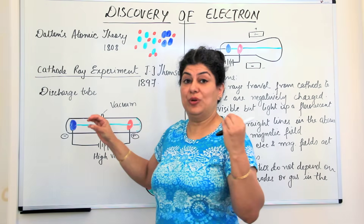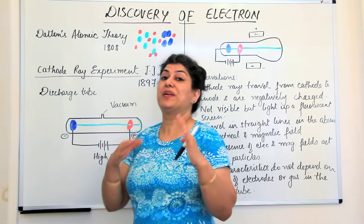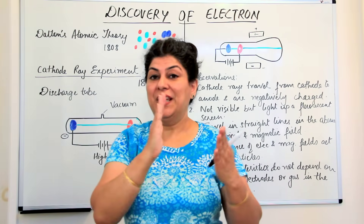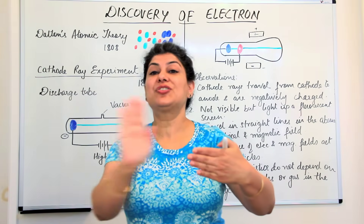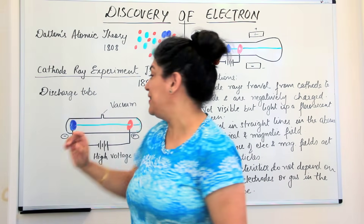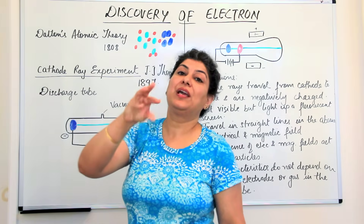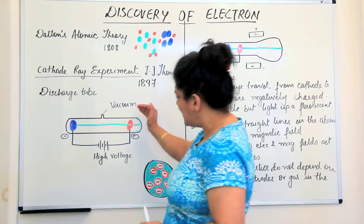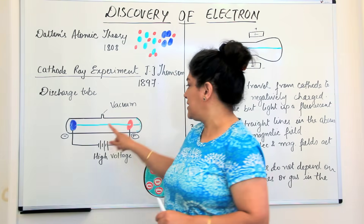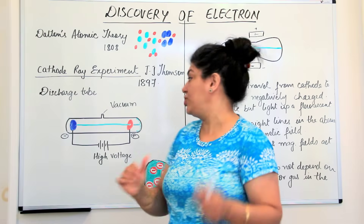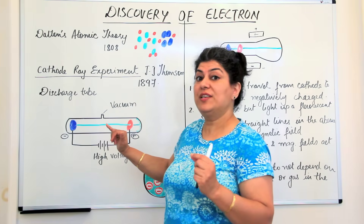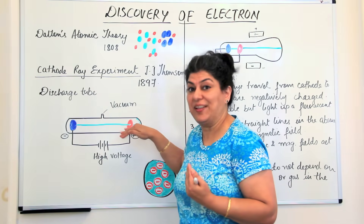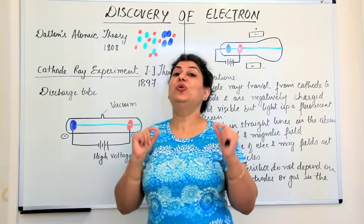This is the cathode ray tube, which is also present in television screens producing images. Even today, television screens are coated with fluorescent material, and cathode ray tubes give out beams that illuminate and produce images. Since the illumination was behind the anode, the ray must be coming from the cathode, so he called this the cathode ray.